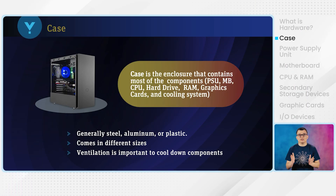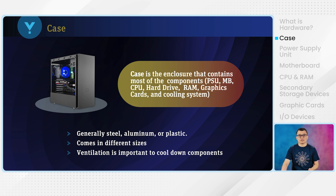First of all, the case. What is the case? It is basically the enclosure that contains most of the components of the computer. Generally, the case is made of steel, aluminum, or plastic, and it comes in different sizes. It contains components such as the power supply unit, motherboard, CPU, hard drive, and graphic cards — everything is contained in this case.